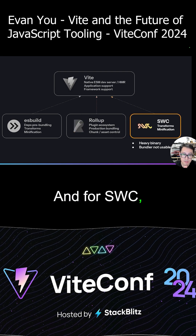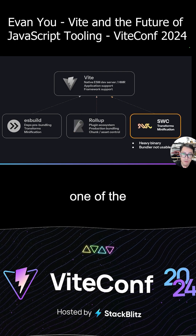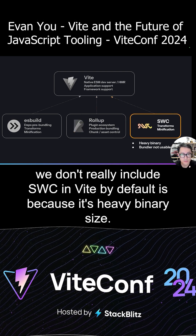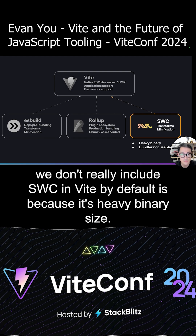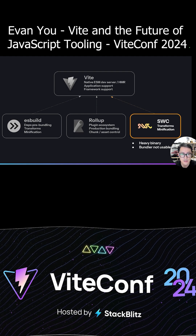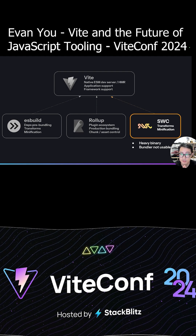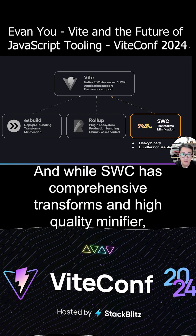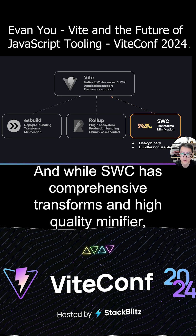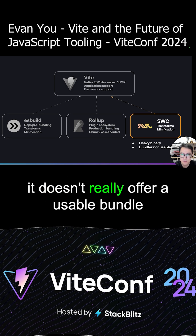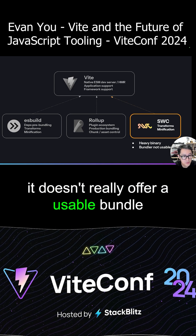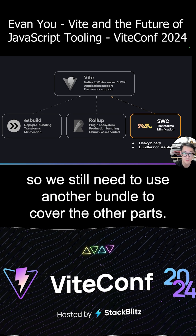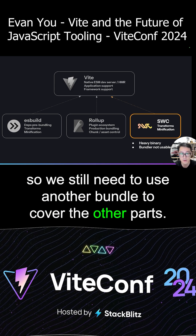And for SWC, one of the reasons we don't really include SWC in Vite by default is because of its heavy binary size. And while SWC has comprehensive transforms and a high-quality minifier, it doesn't really offer a usable bundler, so they still need to use another bundler to cover the other part.